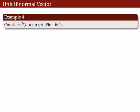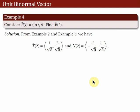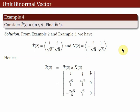Let's consider again r(t) = ⟨ln t, t⟩ and find B(2). We need the cross product of T(2) and N(2), which we have already computed. Recall T(2) and N(2) from previous examples. We simply add 0 as the third component to each vector and compute the cross product, obtaining the vector ⟨0, 0, 1⟩. This is a unit vector perpendicular to both T(2) and N(2), so it is the unit binormal vector.